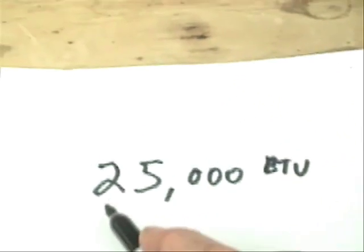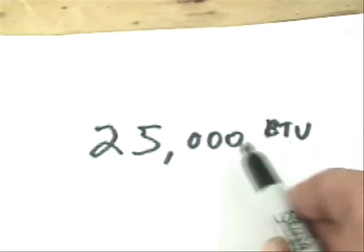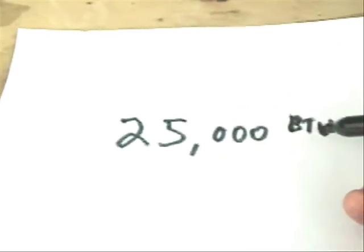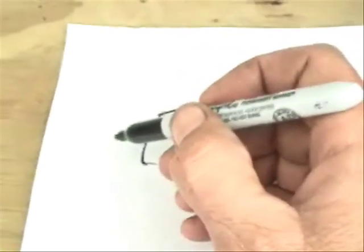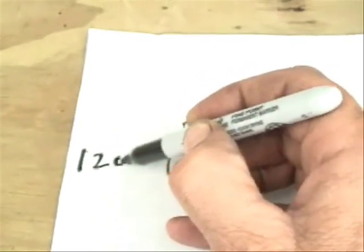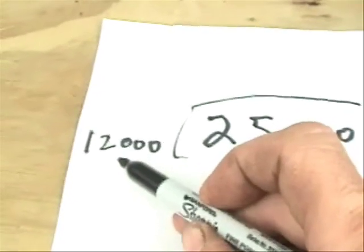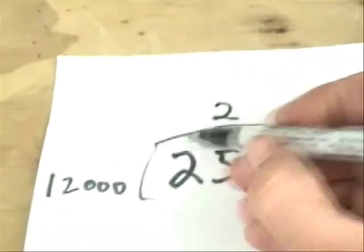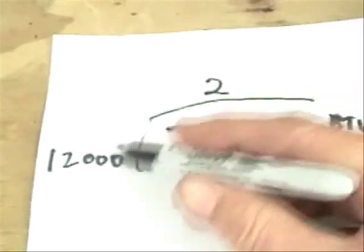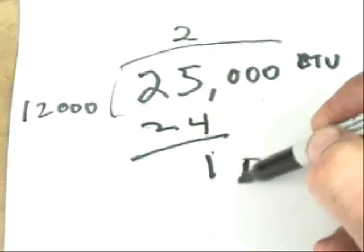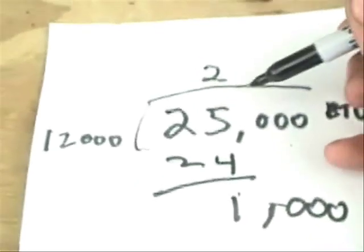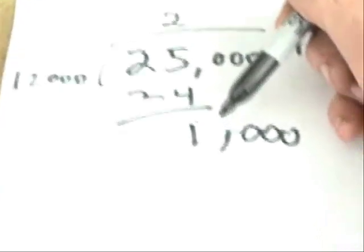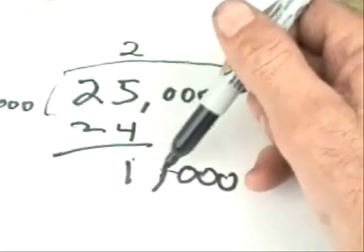If we have an air conditioning system that is rated at 25,000 BTUs, to calculate exactly how many tons this is equal to, we divide it by 12,000, because there are 12,000 BTUs in a ton. That's going to be 2 tons, but also there's an extra 1,000 BTUs. So what we have here is a 2-ton air conditioning system, which is actually slightly over — it's an extra 1,000 BTUs.